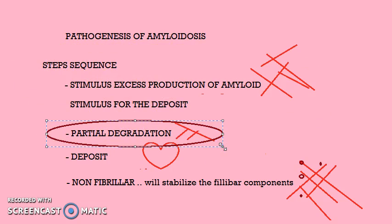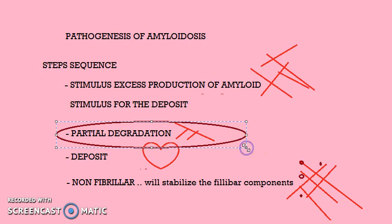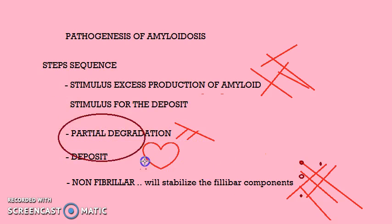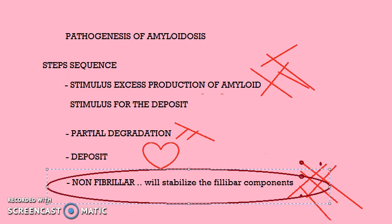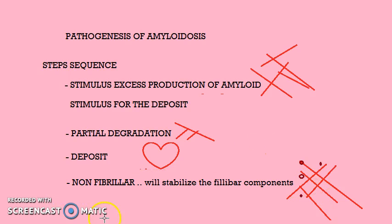Before the deposit itself, there will be an attempt to degrade the proteins by the reticular endothelial system and the macrophages. Then you have the deposit happening. After the deposit come the non-fibrillar components, which will stabilize the fibrillar components. They are only five percent, but they stabilize the 95 percent fibrillar components.